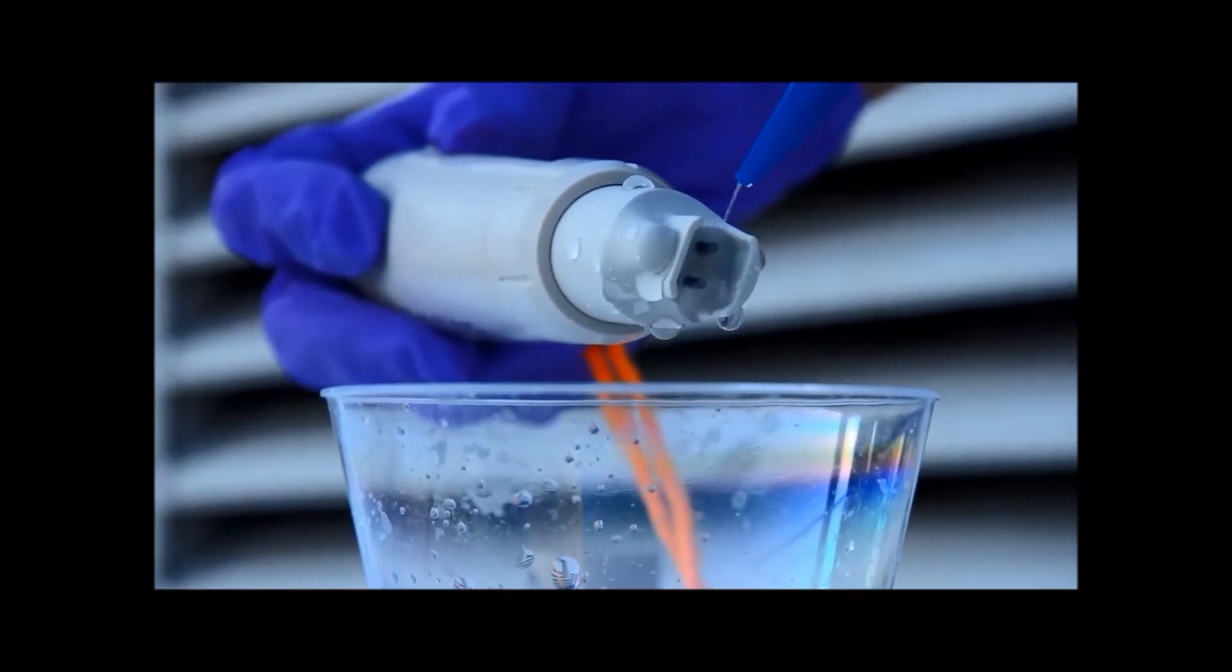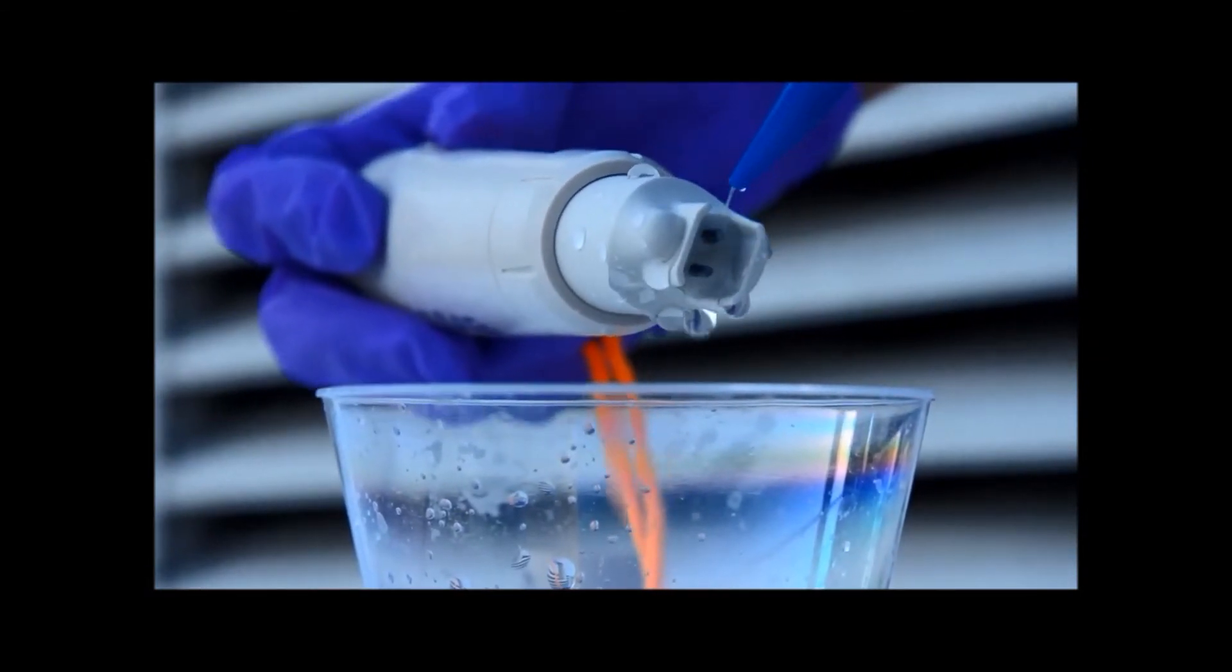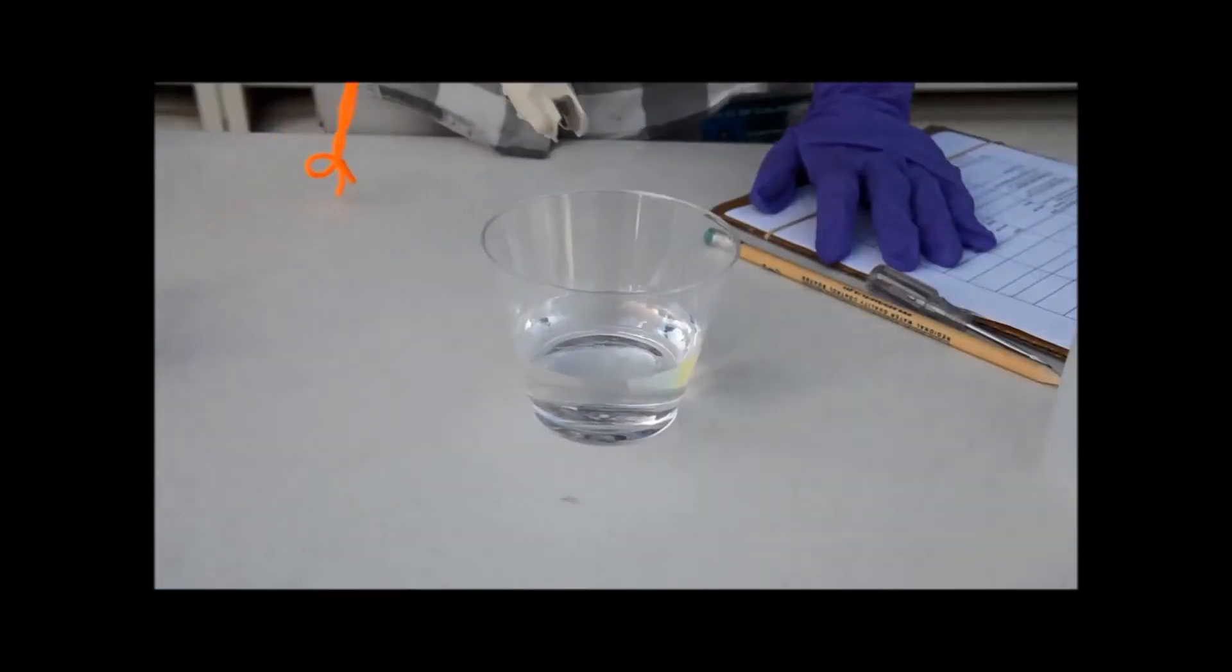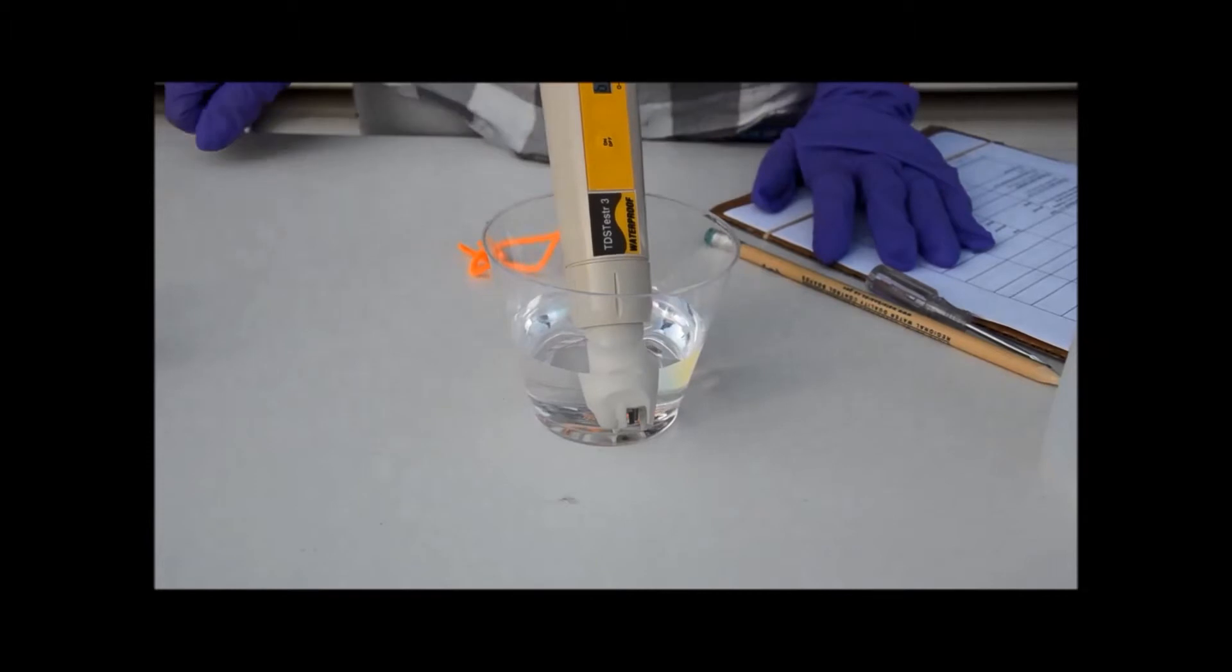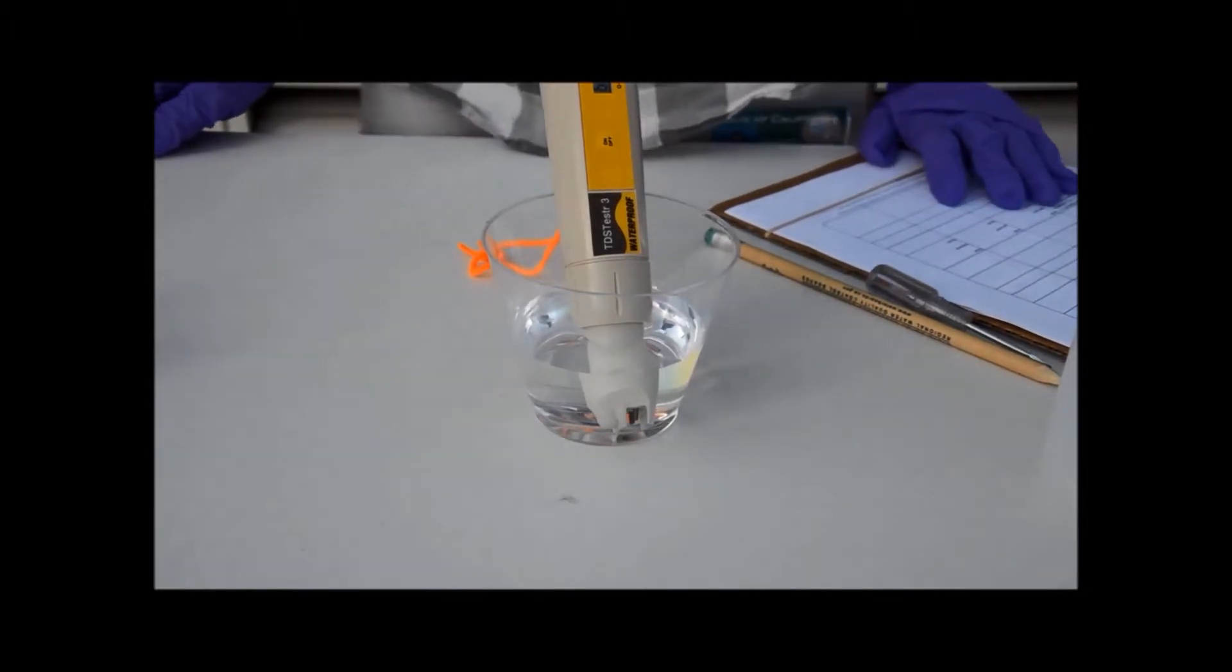Place your clean TDS probe into the container filled with fresh calibration solution. Check your meter's digital readout and compare it to your calibration standard. Record the value of this first reading.